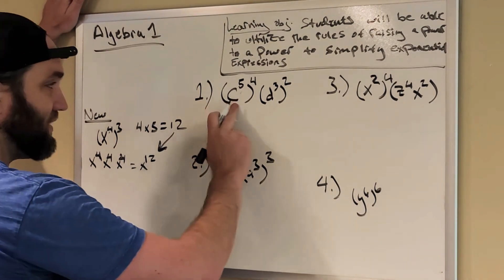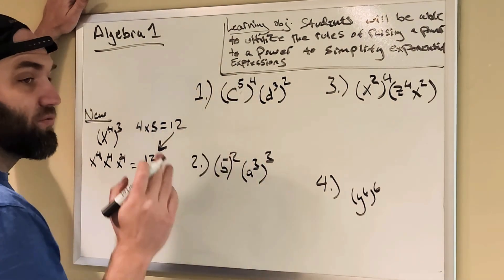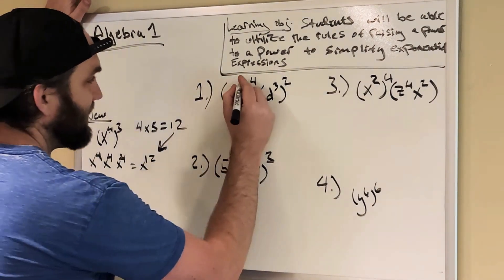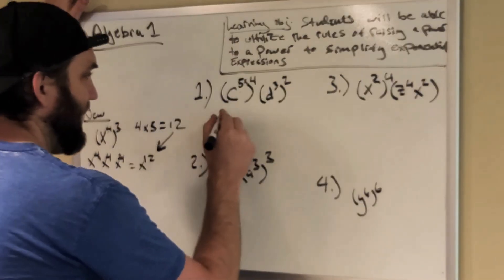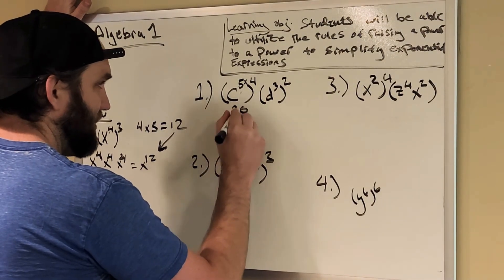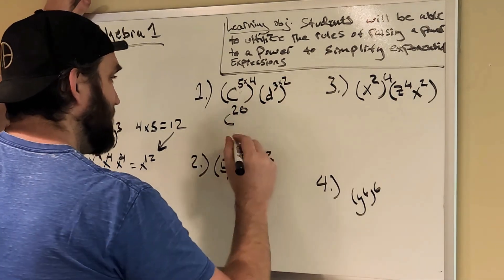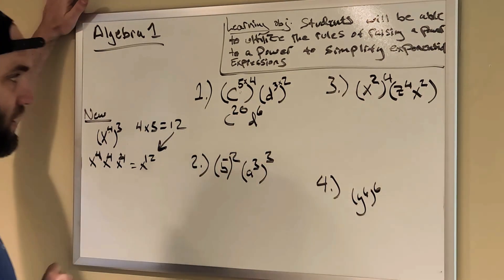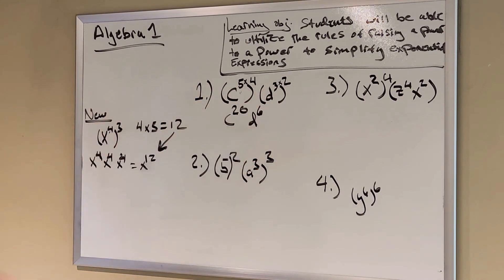All right. So I have c to the fifth power to the fourth power. Okay. Rather than writing out c to the fifth four times, I'm just going to take the five and the four, and I'm going to multiply them. So I have c to the 20th. And then the same thing with the d. Three times two is six. d to the sixth. All right. See how we multiply the five and the four, got 20. The three and the two, got six.